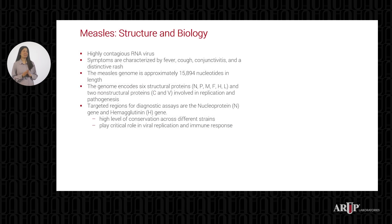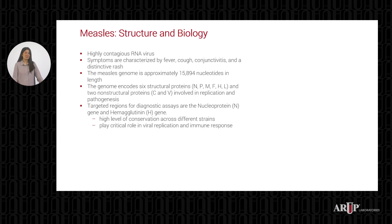Now let's start with a brief overview of measles. As I mentioned, it's a highly contagious RNA virus. The symptoms are characterized by fever, cough, conjunctivitis, and a distinctive rash. The measles genome is relatively small, about 16 kilobases in length. The genome encodes six structural proteins and two non-structural proteins.